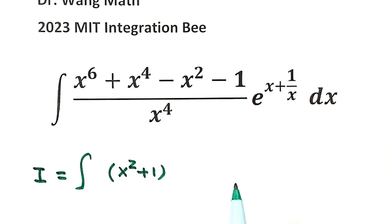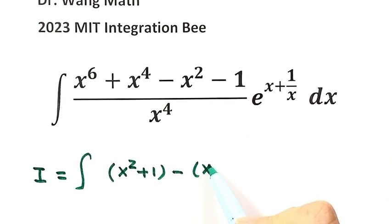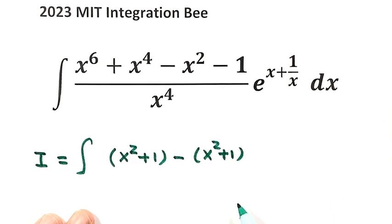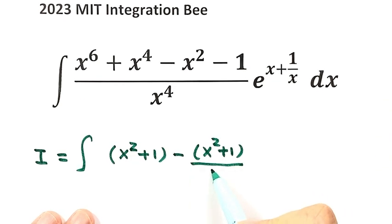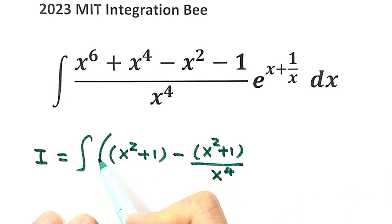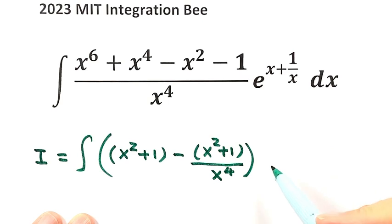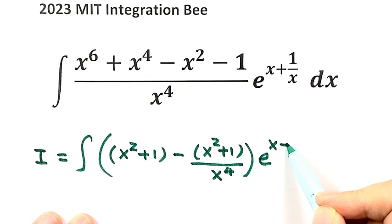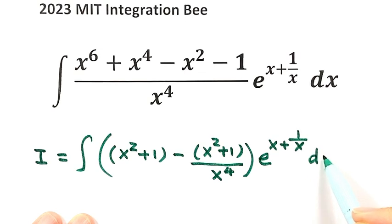For the second part, take out the negative sign. Here: minus x squared plus 1, divided by x to the power of 4. Then write down the rest of the part. Here: e to the power of x plus 1 over x, then dx.